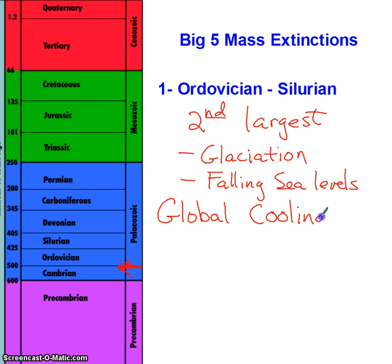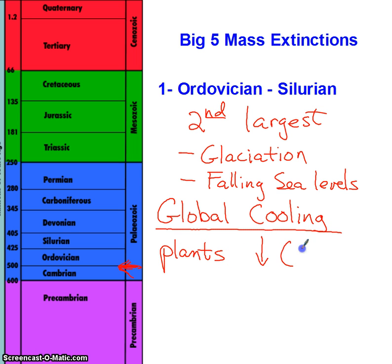We talk a lot about global warming where we increase CO2 levels, but in this instance, there was such a flourishing of green plant life that the plants actually overwhelmed the atmosphere and reduced the CO2 levels. That decreased the ability for the atmosphere to hold its heat. Green plants were actually a detriment to the Earth at that time because it didn't allow for the CO2 to keep our atmosphere warm. So that's one interesting theory of global cooling in this period.